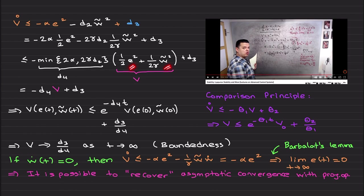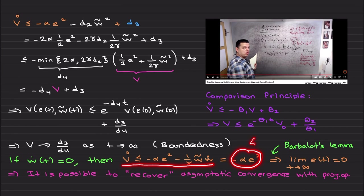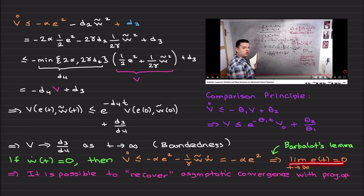Including e and W̃, the system is bounded with d₃/d₄ as the ultimate bound. As I mentioned, if ẇ were zero, from this step we would obtain v̇ ≤ 0 and could apply Barbalat's lemma — as in the previous videos — to conclude that the error goes to zero as t → ∞, recovering asymptotic convergence. When using the projection operator, if w is time-varying and eventually approaches a constant, you recover asymptotic stability, which is better than mere boundedness.